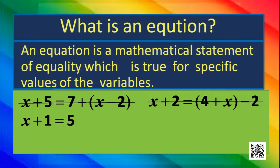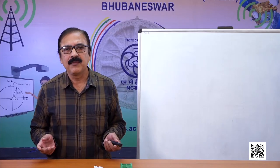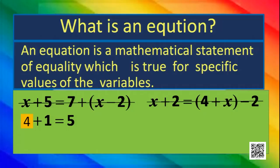Then what is an equation? Consider this case: x plus 1 is equal to 5. For which value of x do we get x plus 1 equal to 5? In common language, which number added to 1 gives 5? Definitely it is 4. Then we can say that for x equal to 4, x plus 1 is equal to 5. So x equal to 4 is called the solution of this equation.